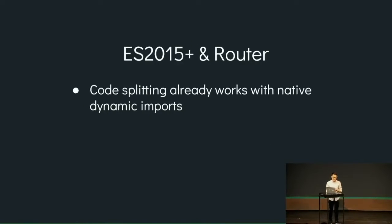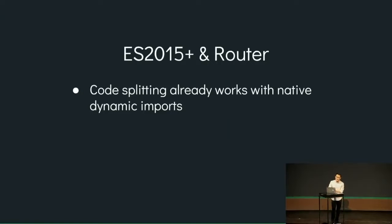For the router and code splitting: currently with webpack you do a dynamic import and webpack translates it into an async AJAX request that fetches the corresponding chunk. Our code-splitting implementation is actually implementation-agnostic — even if the code isn't transpiled by webpack and uses native dynamic imports in the browser, it already works with our router. In the future, when more browsers support native dynamic imports, you can just use them directly, and hopefully webpack will offer a Modern Mode that emits chunks using real native dynamic imports.